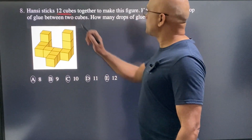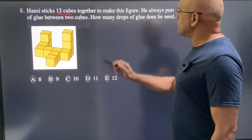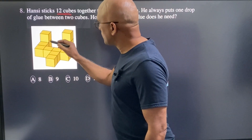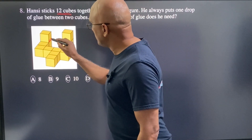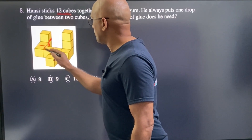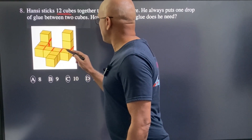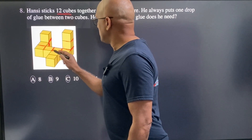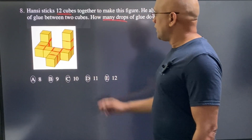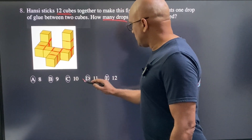Hansi sticks 12 cubes together to make this figure and puts one drop of glue between every two cubes. How many drops of glue does he need? We simply count the joints: one, two, three, four, five, six, seven, eight, nine, ten, eleven. D is the correct choice.